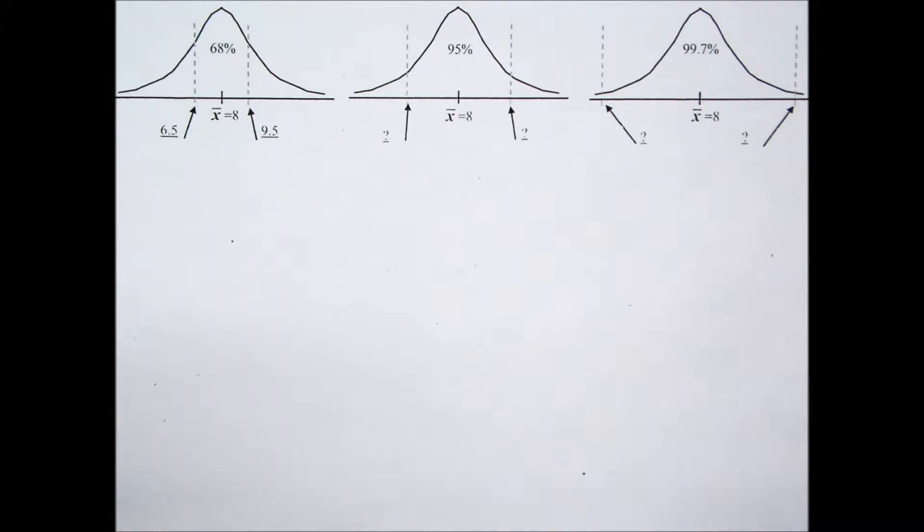Label the upper and lower boundary values where you would expect to find 68% of the data, 95% of the data, and 99.7% of the data. The first one has been done for you.